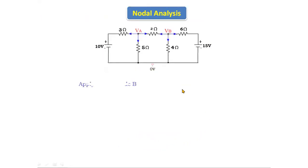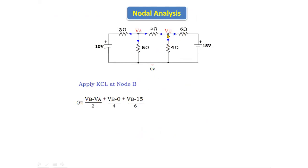Now let's apply KCL at node B. At node B, I am also assuming all currents are leaving. Here I assume VB is greater than all other voltages. The leaving currents are: (VB − VA)/2 plus VB/4 plus (VB − 15)/6. Entering current equals zero.